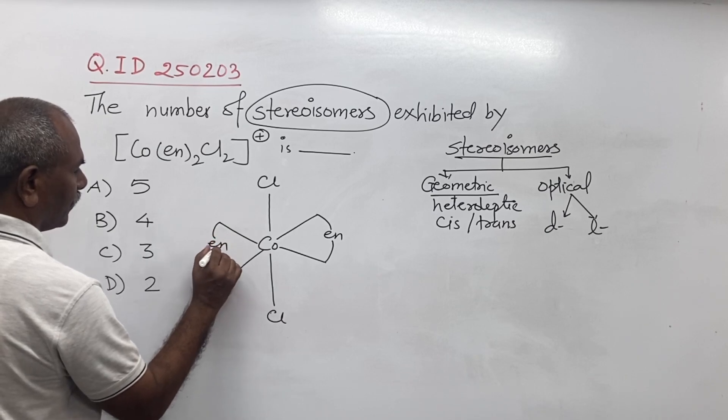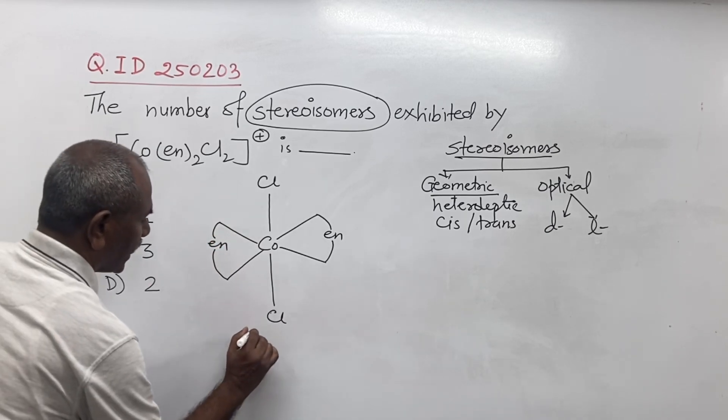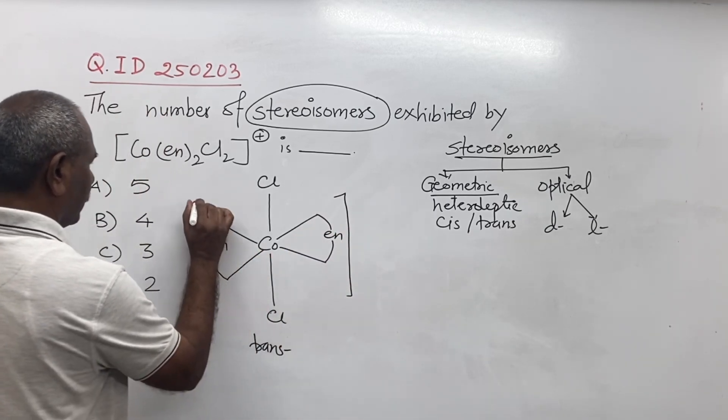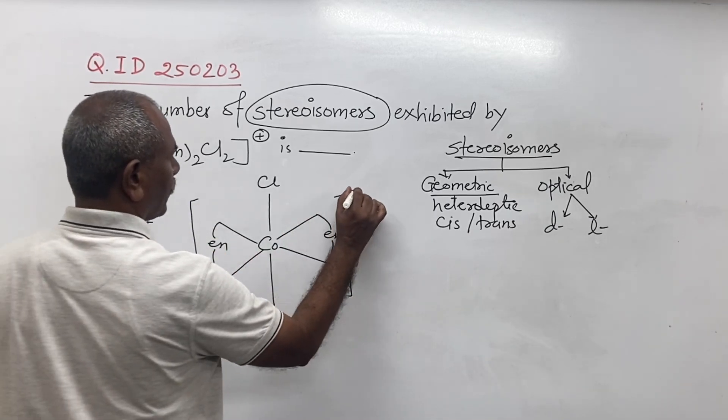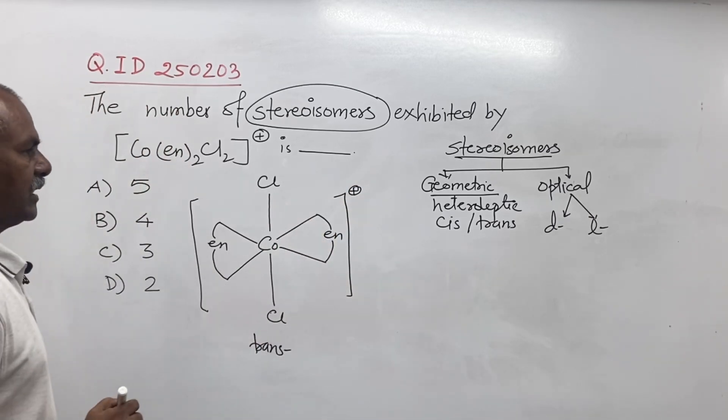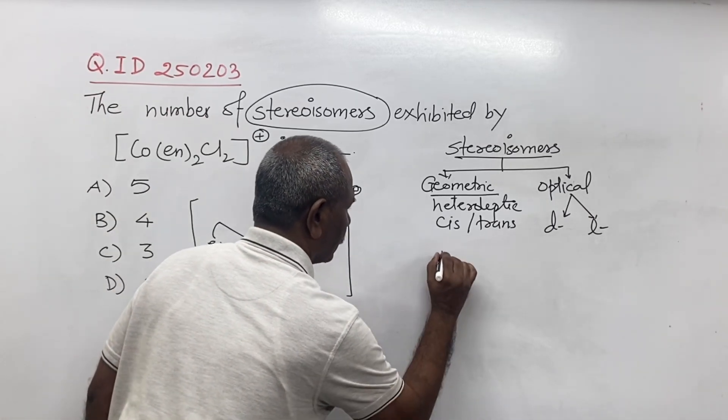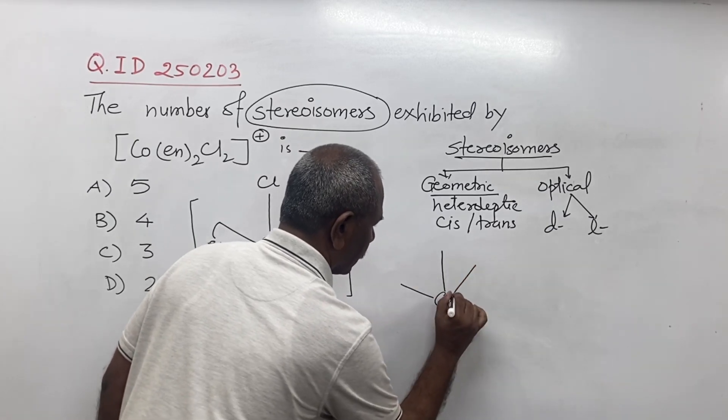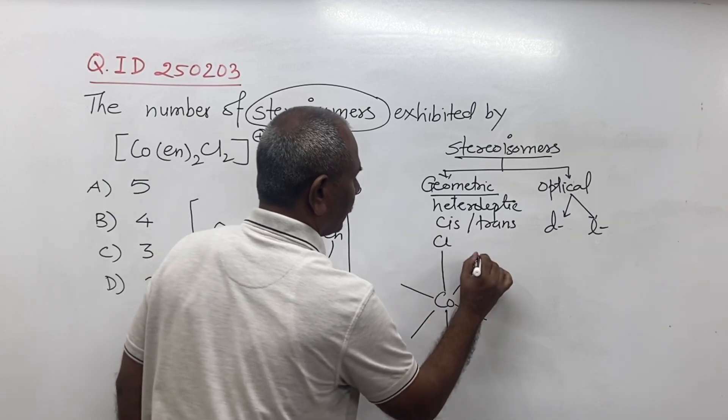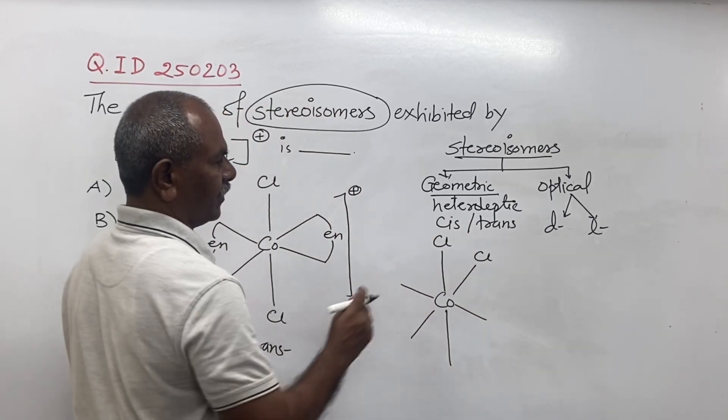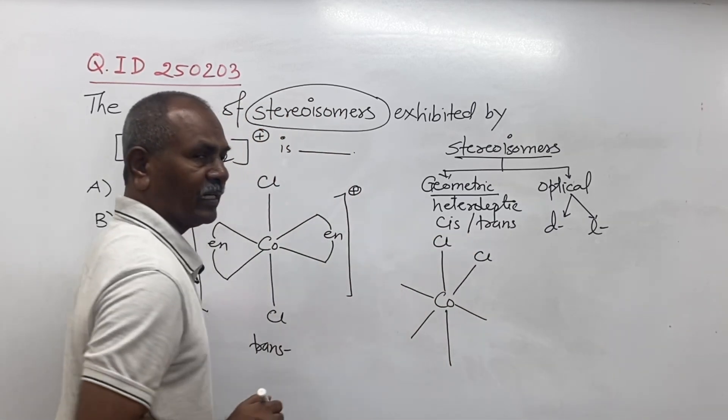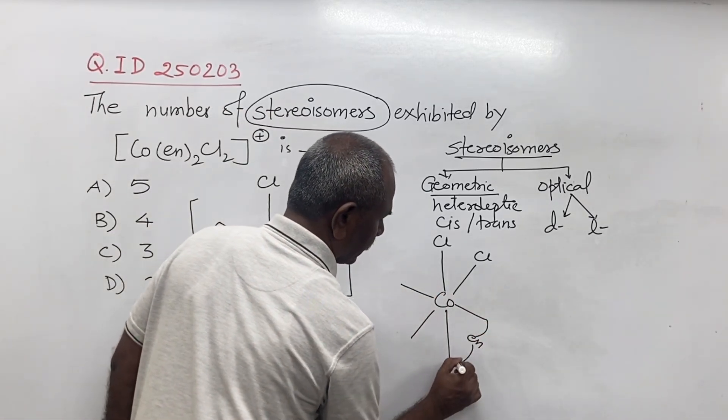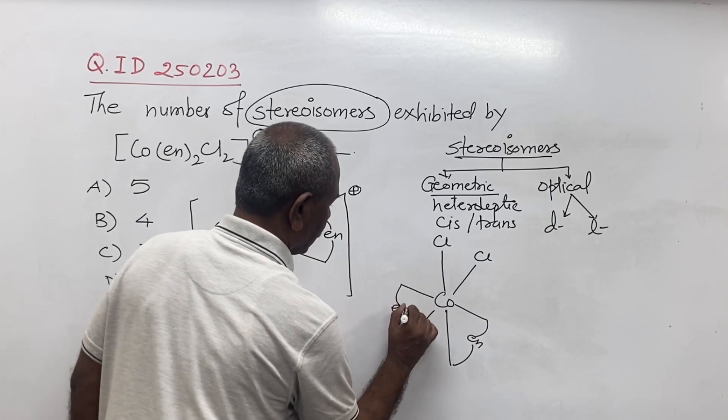And second, and then here you write Cl and Cl. The angle between two is 90 degrees, so en, en.